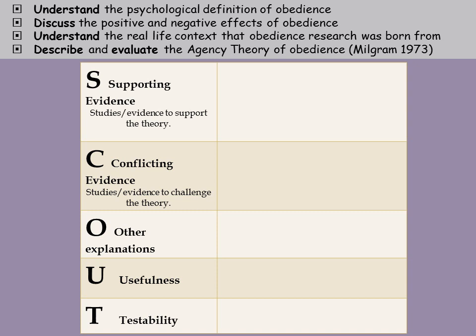O stands for other explanations — are there different theories of obedience that agency theory differs from? U is usefulness within society, similar to the application point we look at within a study. And T is testability — how likely or available is it that we can test this theory to see if it's correct?